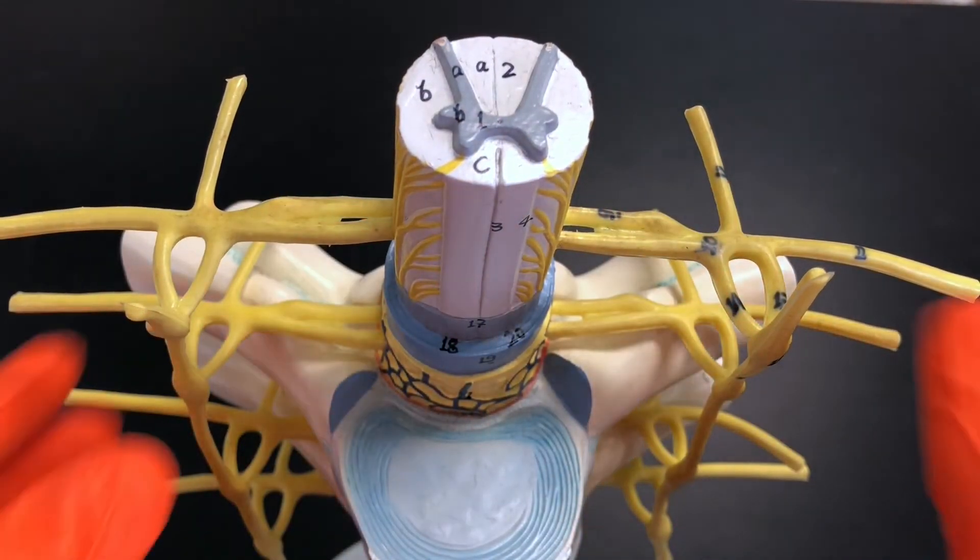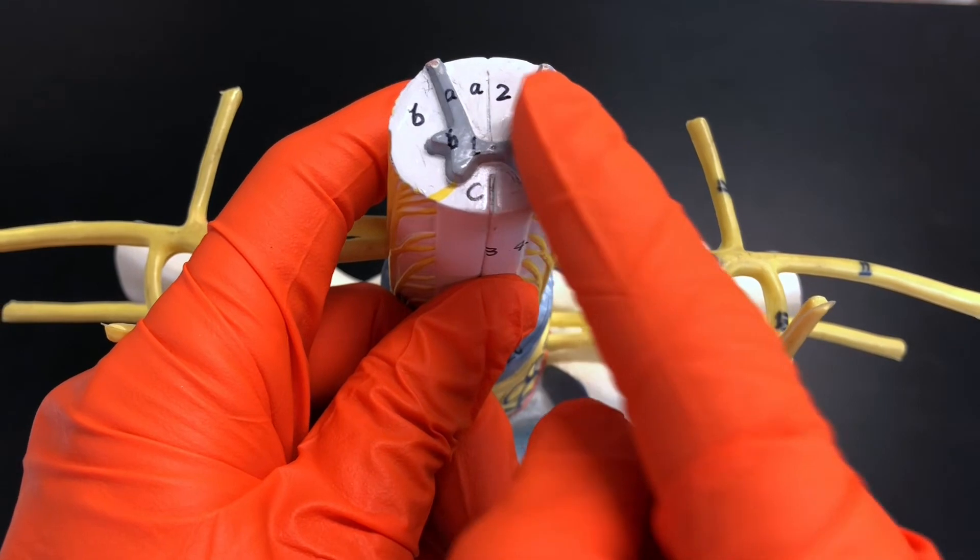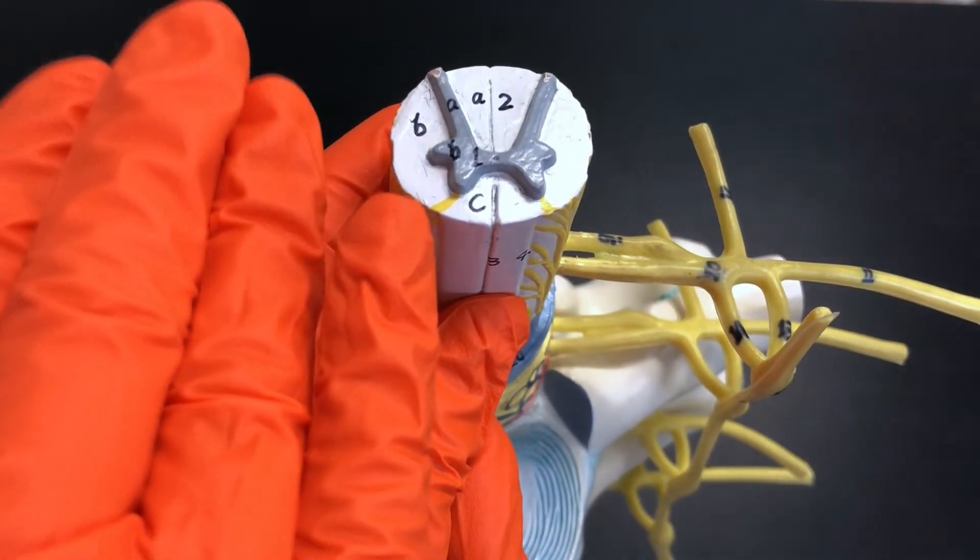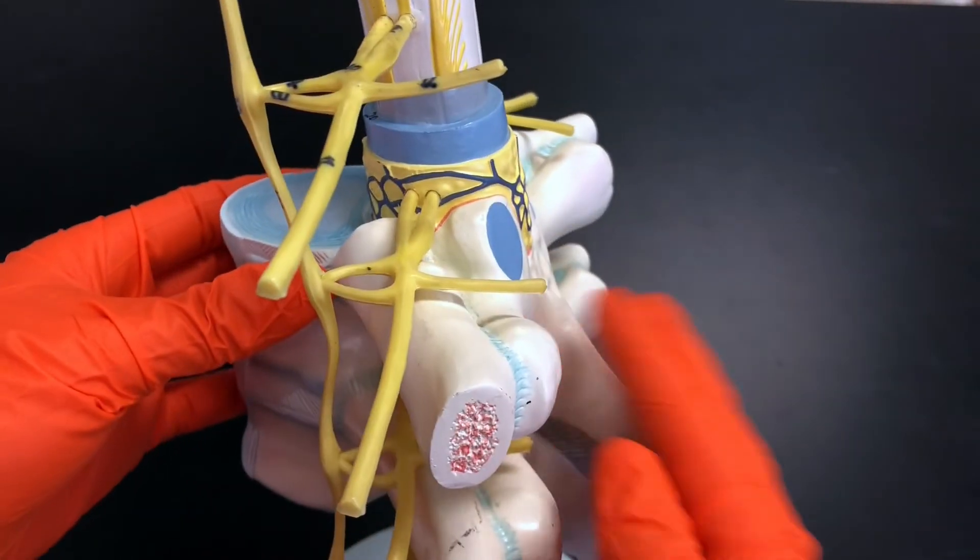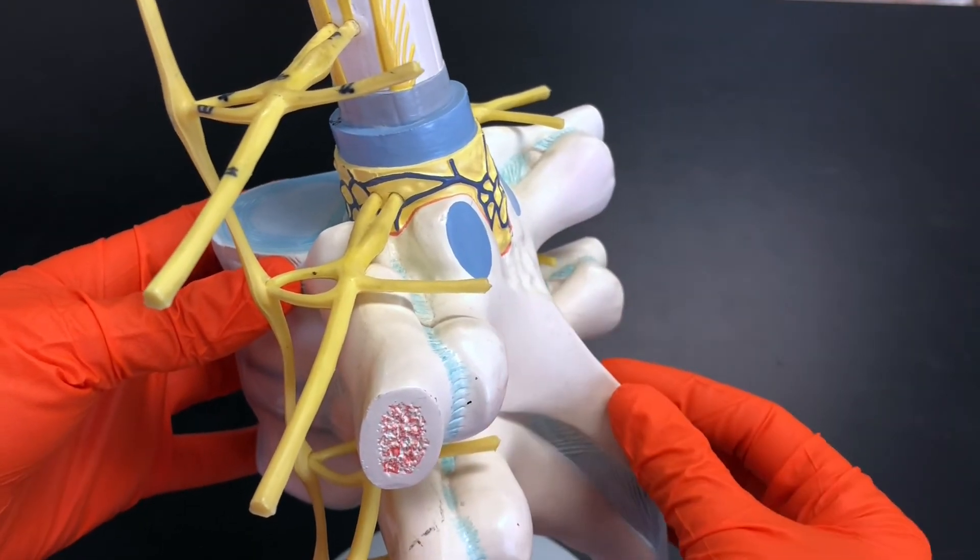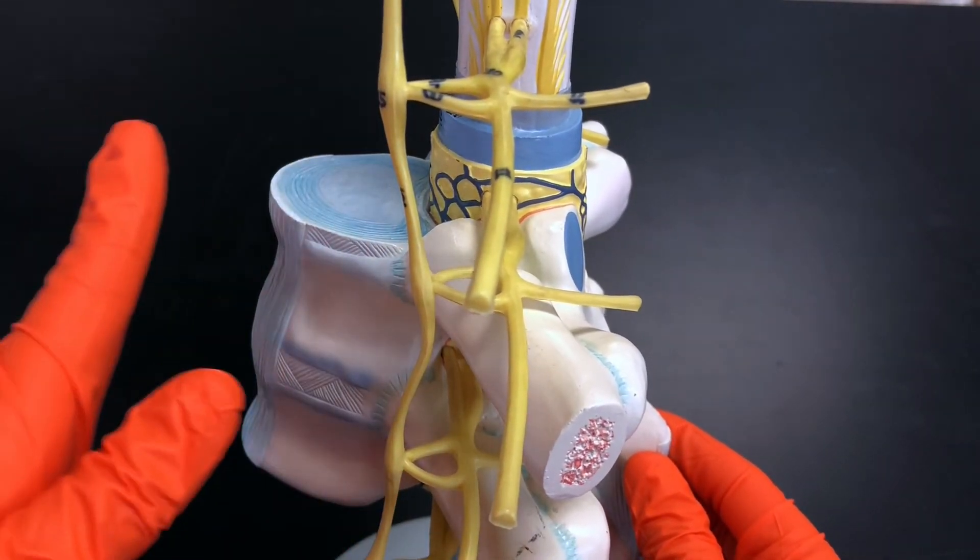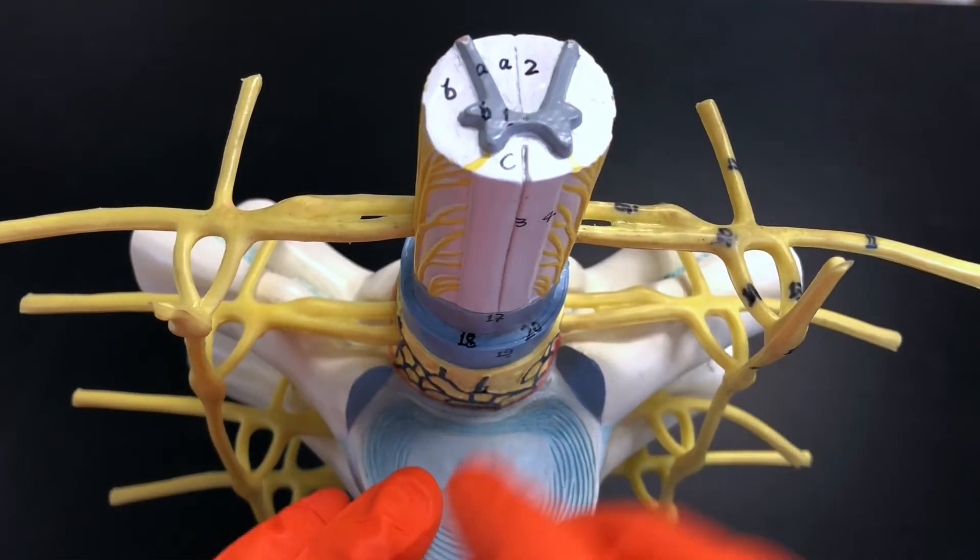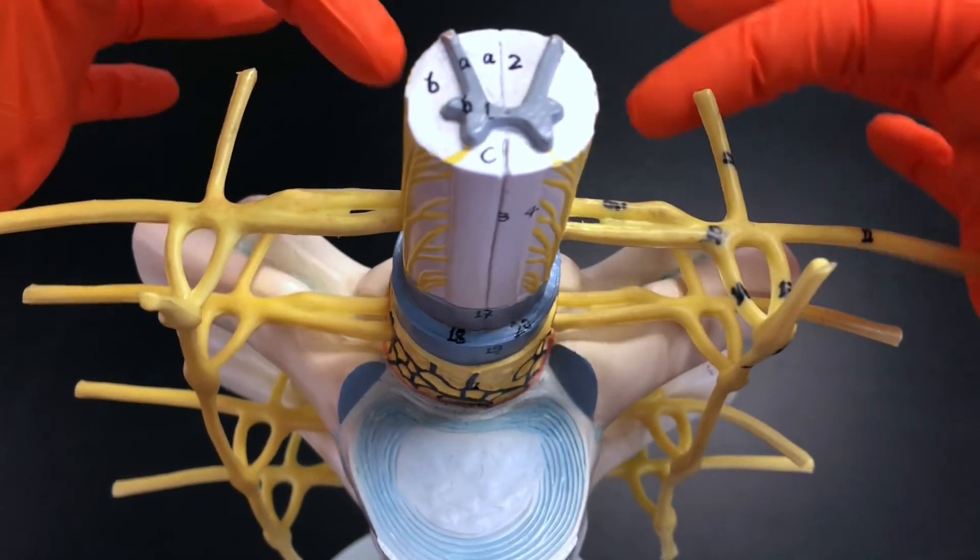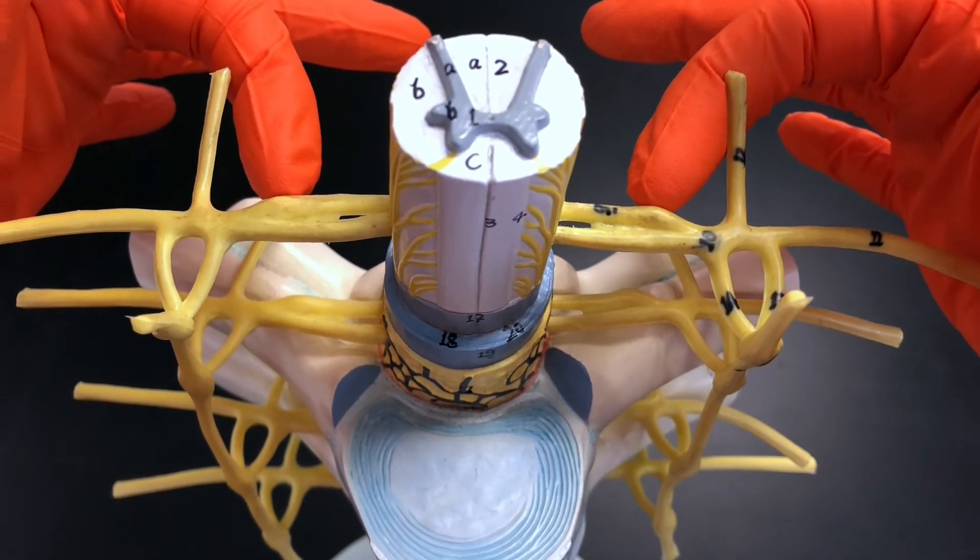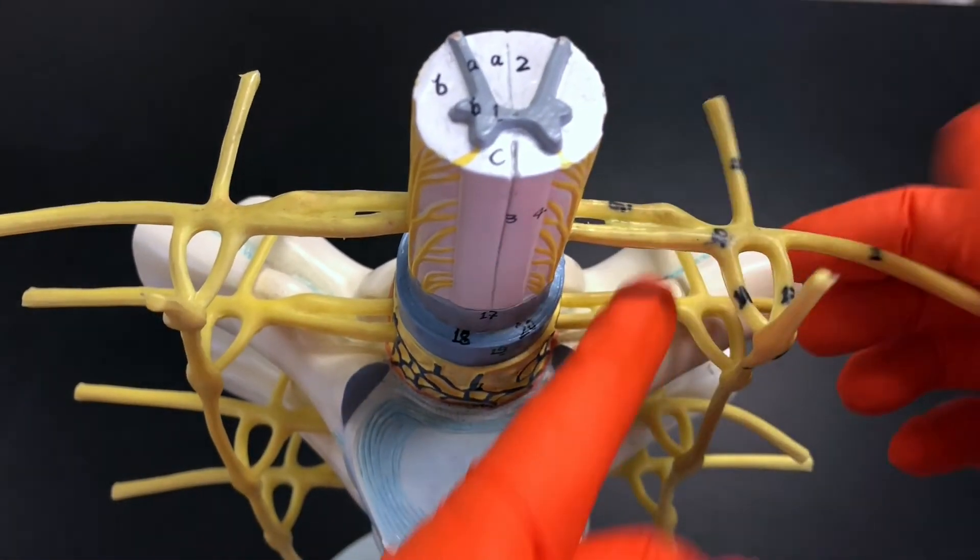This model right here shows a little bit more than what the previous model showed. So remember here we have the gray matter makes that kind of H shape we have the white matter this is anterior posterior right side left side. This model has the vertebra on it so here we have the spinous process, we know the spinous process of the vertebra is the posterior side. Here's the vertebral body we know that's anterior. So outside of the spinal cord itself here we have the posterior root this little bulge is that posterior root ganglion here we have the anterior root and then where those two meet up that's what we call that spinal nerve.